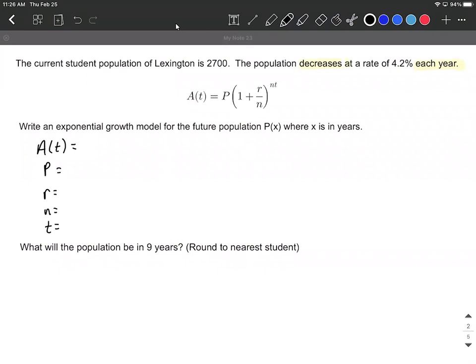Now, in this case, they've told us our future population is going to be represented by P of X instead of A of X. So P of X is going to go in for A of X's spot. P, the amount that we start with, was given to us at the beginning to be the current population is 2,700.